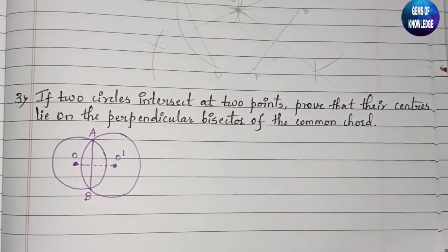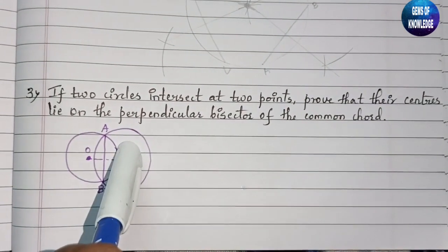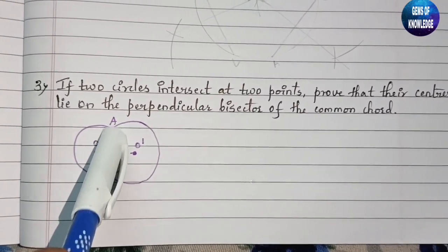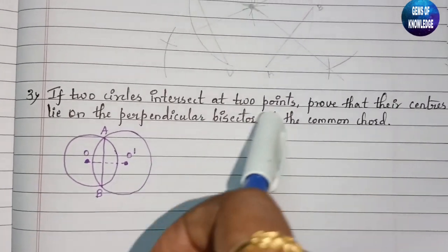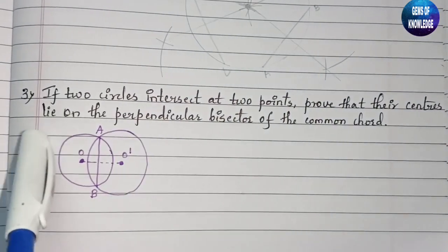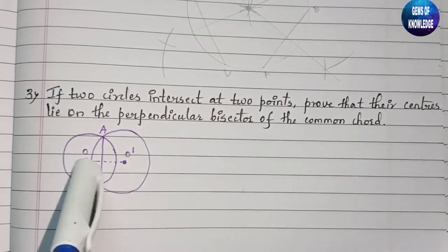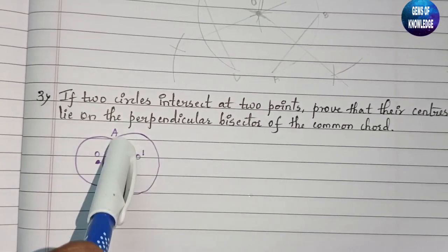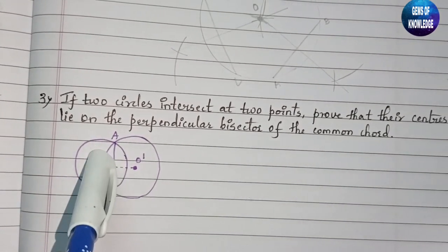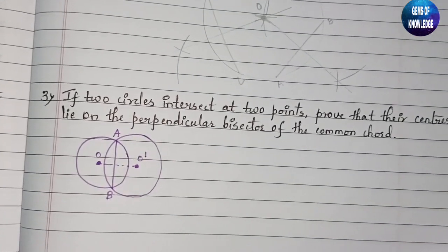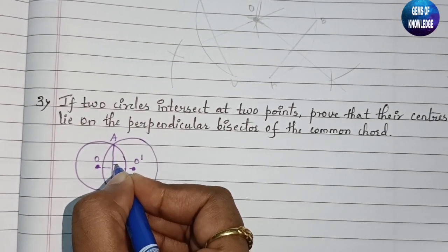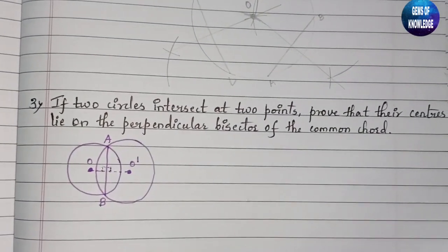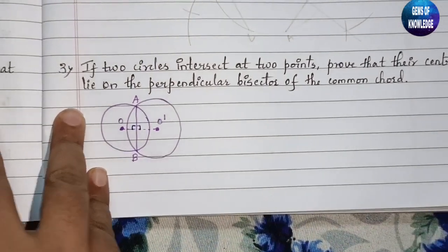The last question: if two circles intersect at two points A and B, we need to prove that their centers lie on the perpendicular bisector of the common chord. That means the centers lie at 90 degrees from the chord AB.